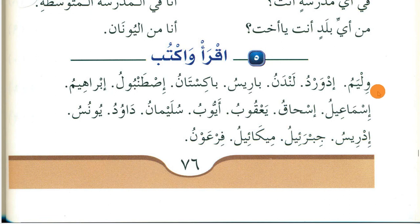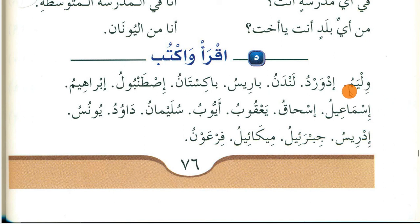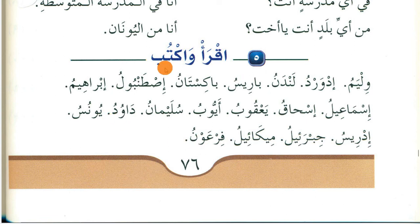Read and write: Remember from grammar — with non-Arabic proper nouns we use damma only, we cannot use tanwin with them. You see with all of these we are using damma because they are non-Arabic proper nouns (mamnu' min al-sarf). Examples: William, Edward, London, Paris, Pakistan, Istanbul, Ibrahim, Ismail, Ishaq, Ya'qub, Ayyub — all use damma only.